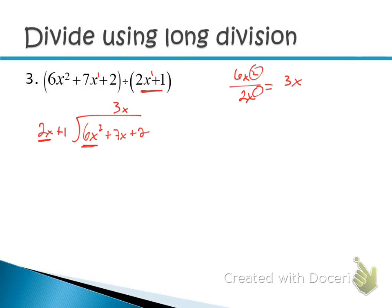Just like in long division with numbers, multiply down: distribute 3x into 2x + 1 to get 6x² + 3x. Now subtract — remember when subtracting polynomials, put the second polynomial in parentheses and distribute the negative, changing all the signs. So this becomes −6x² − 3x. Combining like terms: 6x² + (−6x²) = 0 and 7x − 3x = 4x. Bring down the 2.